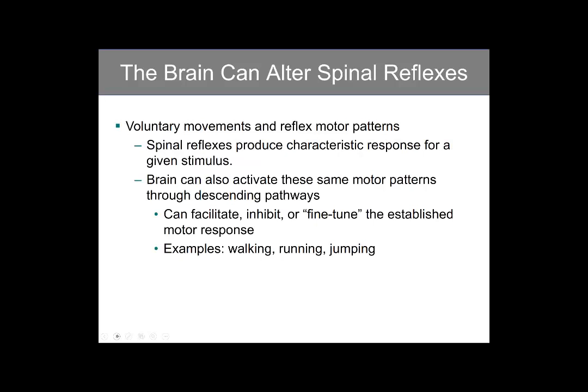Voluntary movements and reflex motor patterns. Spinal reflexes produce characteristic responses for a given stimulus. The brain can also mimic or activate these same motor patterns through the normal descending pathways that travel from the central nervous system to the peripheral nervous system. These pathways can facilitate, inhibit, or fine-tune the established motor response, and we do this all the time when we walk, run, or jump.